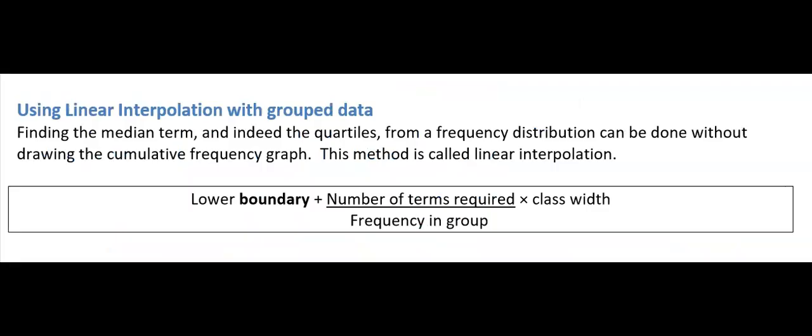We're now going to look at using linear interpolation with grouped data. Previously, to find the median from grouped data you'd set up a cumulative frequency table, draw a cumulative frequency curve, go halfway up the vertical axis, go across and then down to read off the median — a rough, not very accurate method. We'll now look at a formula-based approach, which will make more sense once we see the examples.